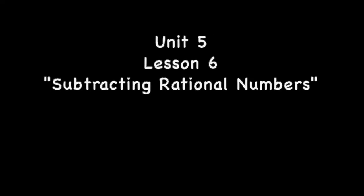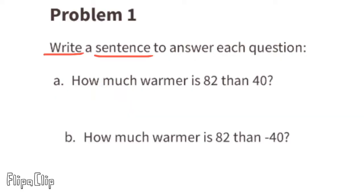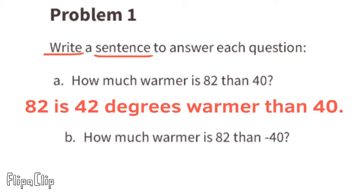7th grade Open Up Resources Illustrative Mathematics, Unit 5 Lesson 6, subtracting rational numbers. Problem number one: write a sentence to answer each question. Part a: how much warmer is 82 than 40? 82 is 42 degrees warmer than 40.